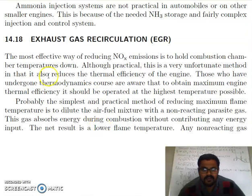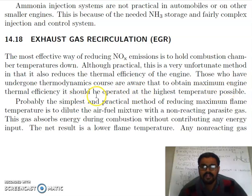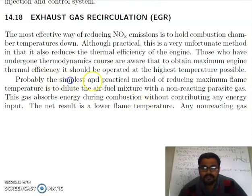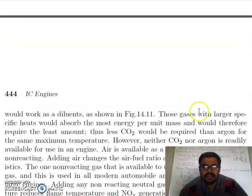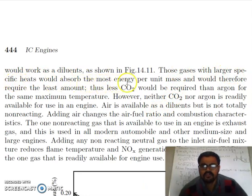The most effective way of reducing NOx emissions is to hold combustion chamber temperatures down. Although practical, this unfortunately also reduces the thermal efficiency of the engine — those familiar with thermodynamics know that maximum engine efficiency requires the highest possible temperatures. The simplest and most practical method of reducing maximum flame temperature is to dilute the air-fuel mixture with a non-reacting parasite gas. This gas absorbs energy during combustion without contributing any energy input, resulting in a lower flame temperature. Gases with larger specific heat absorb the most energy per unit mass and therefore require the least amount; thus less CO2 is required than argon for the same maximum temperature.